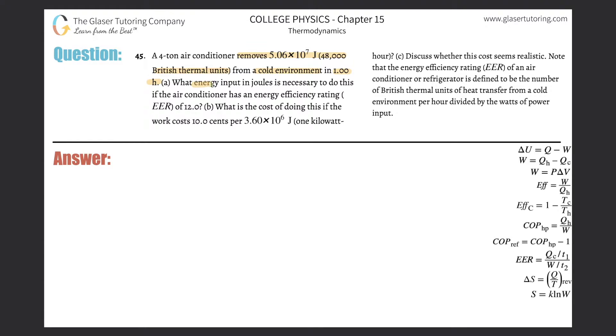All right, letter A: what energy input in joules is necessary to do this if the air conditioner has an energy efficiency rating EER of 12? All right, so we're going to be using this formula. We're involving energy efficiency rating, so let's discuss that quickly because I don't necessarily like it in its current form.